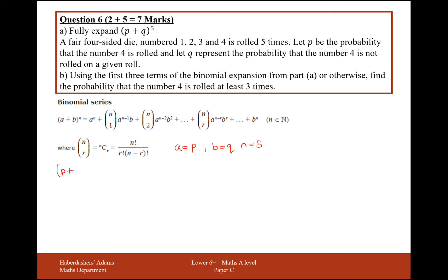So P plus Q to the power of 5 is going to equal P to the power of 5, add 5 choose 1 — that's just going to be a 5 — times P to the power of 4 times Q. What I've done here is 5 take away 1, that's a 4, corresponding to my A value which is P, and B comes up once and that's Q.